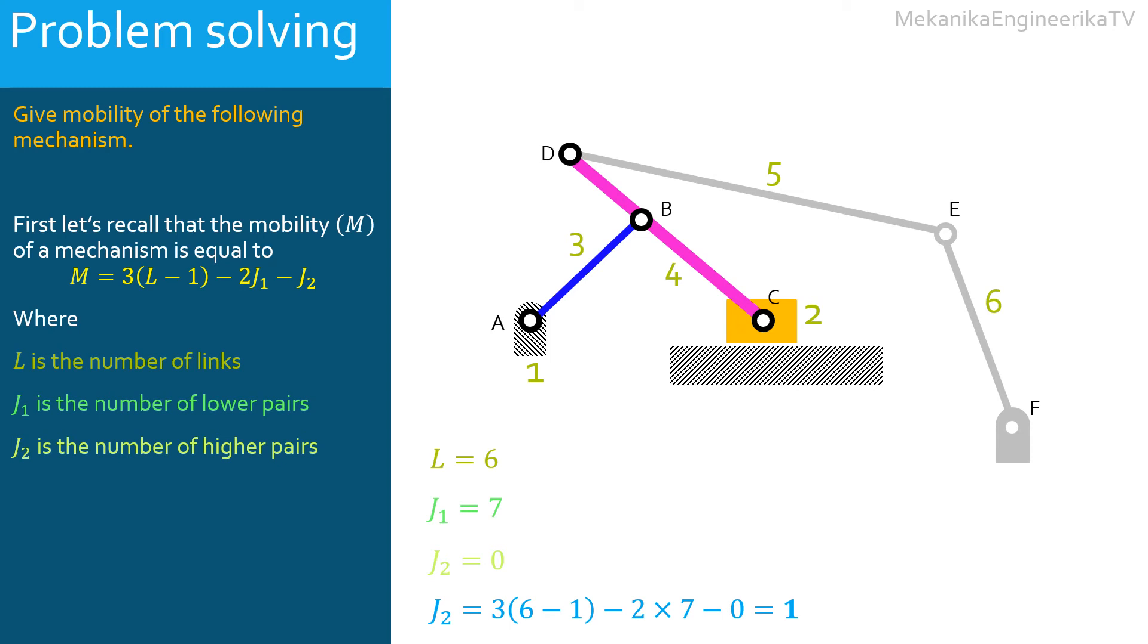Hence, for example, if the motion of the bar AB, link 3, is controlled by any external source of energy, the motions of the slider, link 2, and the bar CD, link 4, are unique and controlled.